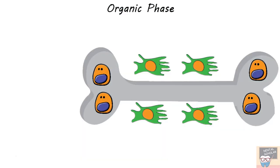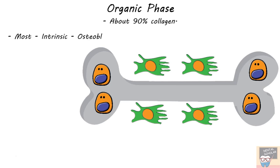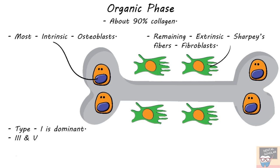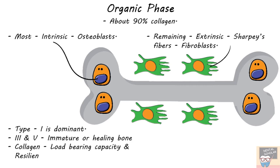About 90% of the organic phase is formed by collagen, mainly type 1 collagen. Most of this collagen is intrinsic, secreted by osteoblasts, and the remaining extrinsic collagen comprises Sharpey's fibers, secreted by fibroblasts. Type 3 and type 5 collagens are also seen in bone, found mainly in immature or healing bone. Collagen imparts load-bearing capacity and resiliency to the bone, preventing it from easily fracturing.